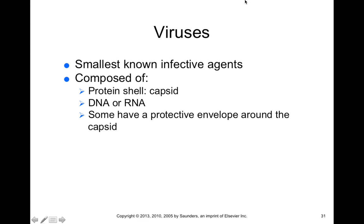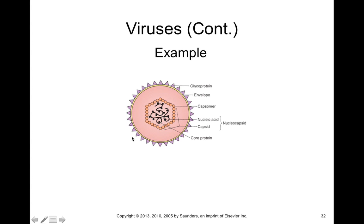Bacteria differ from viruses because viruses are the smallest known infective agents. They are composed of a protein shell called a capsid, with a genome that is either DNA or RNA, and some have a protective envelope around their capsid. The core contains nucleic acids and enzymes. Some viruses package their own enzymes that aid in their ability to infect — such as enzymes that replicate their genome or help hijack host cell machinery.